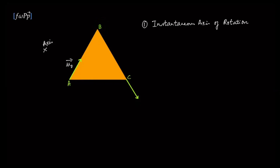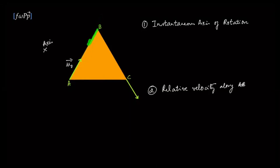The second way is to look at the relative velocity. Because this is a rigid object, the distance between A and B cannot change. Therefore A and B cannot have a relative velocity along the line joining them — a positive relative velocity would mean the distance is increasing, a negative one would mean it's decreasing. So neither can happen, and there should be no relative velocity along AB, and similarly along AC and BC.